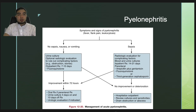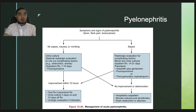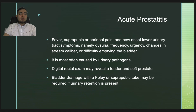If the patient develops sepsis, radiologic evaluation is necessary to rule out obstruction, and the duration of treatment is prolonged to 14 to 21 days. This consists of ampicillin plus gentamicin, fluoroquinolones, or third-generation cephalosporins. If there is no improvement, review imaging and consider placing a drain to address obstruction or drain the abscess.